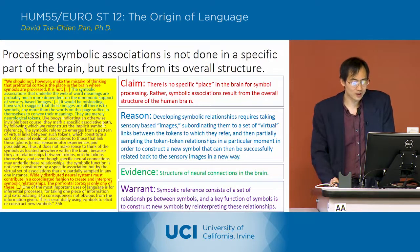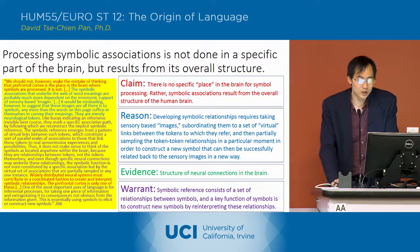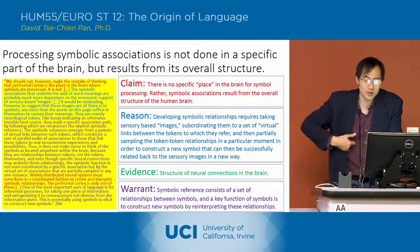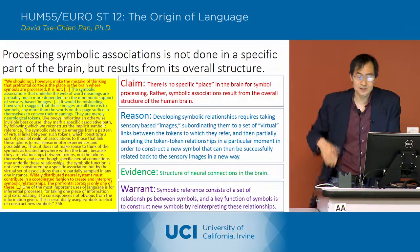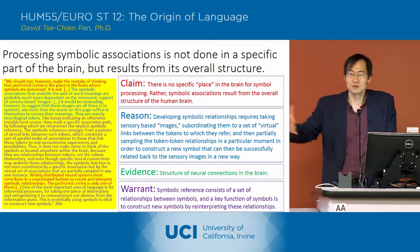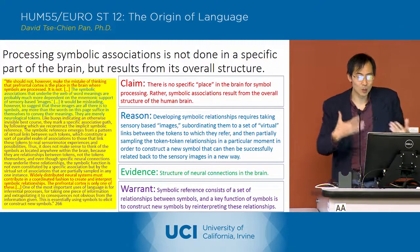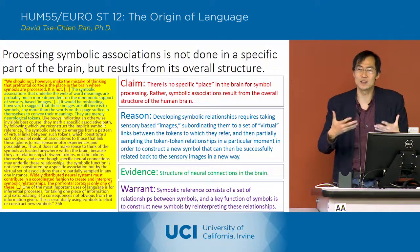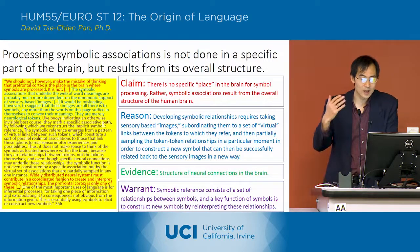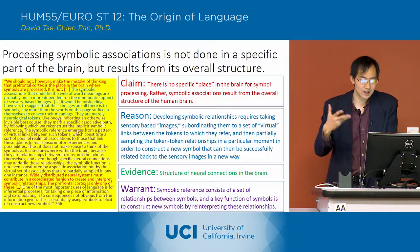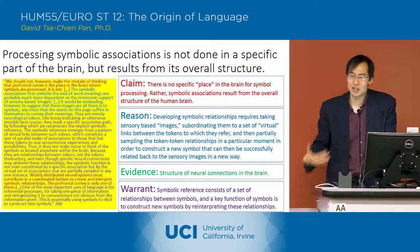What he talks about is the way in which developing these symbolic relationships requires taking sensory information and subordinating it to these symbol-symbol relationships, in a way that you can construct a new symbol that can then be related back to the sensory information.